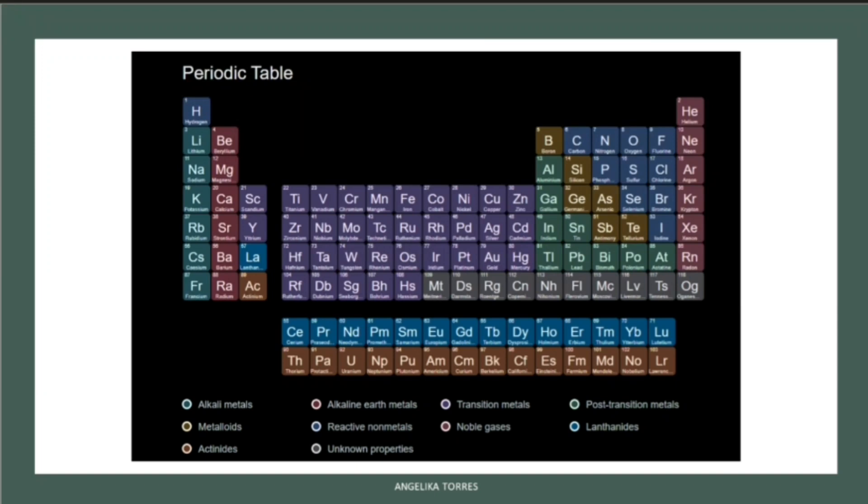Every one of you has heard of the Periodic Table of Elements, or at least seen it. This table classifies all the atoms in the universe into 118 different types, known as elements.